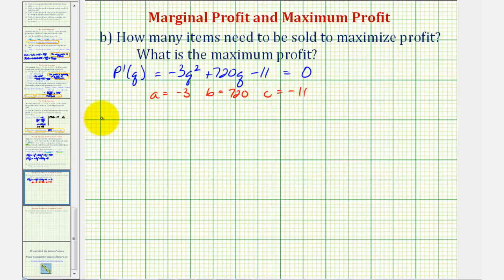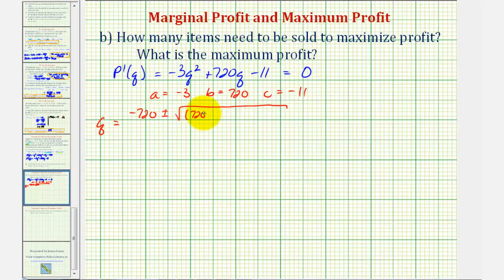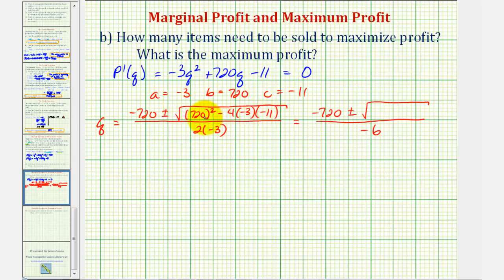Using the quadratic formula, q equals negative b, or negative 720, plus or minus the square root of b squared minus 4 times a, which is negative 3, times c, which is negative 11, divided by 2 times a, or 2 times negative 3. The discriminant, or the number underneath the square root, simplifies to 518,268.